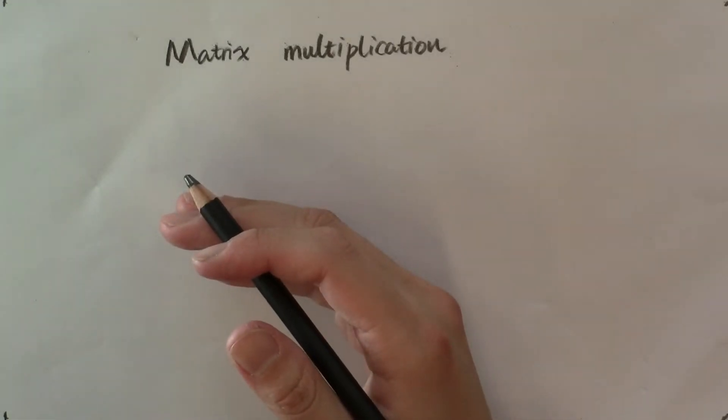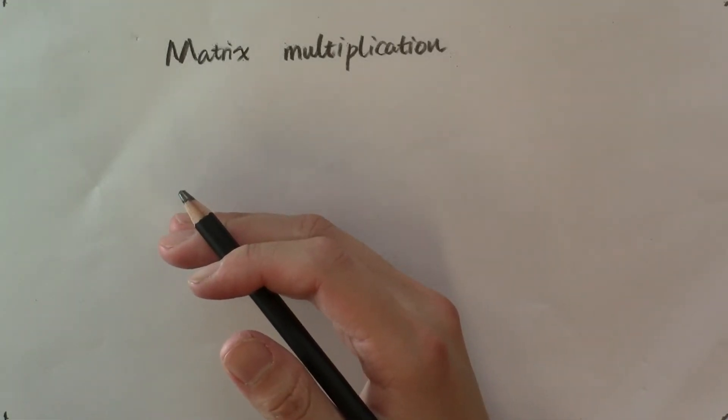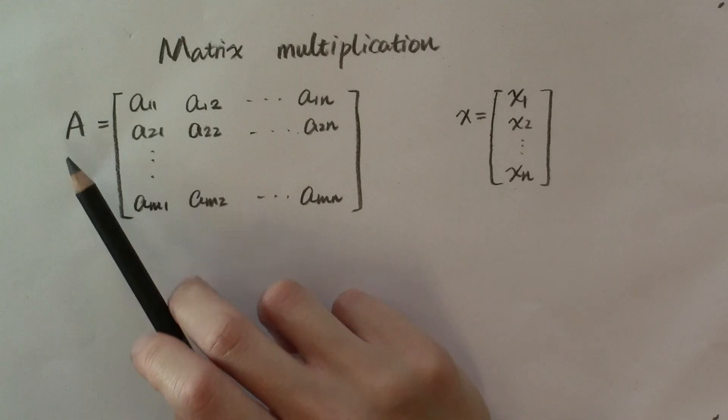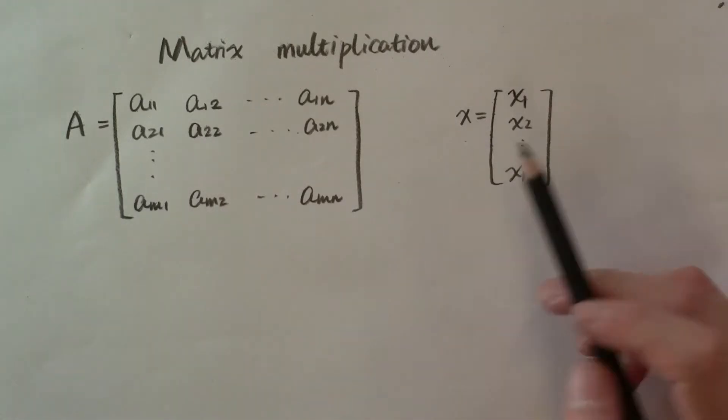Now that we have looked at scalar product of two vectors, we can look at the multiplication of two matrices. Let's first try to multiply a matrix to a vector.